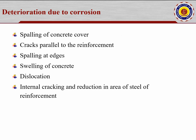Deterioration due to corrosion produces the following effects: spalling of concrete — falling of concrete from the structure, mainly from slabs, as seen in housing board news reports where parts of the roof fall; cracks parallel to the reinforcement developing throughout its length; falling at edges, particularly corners; swelling of concrete; dislocation or settlement; internal cracking; and reduction in area of steel reinforcement.